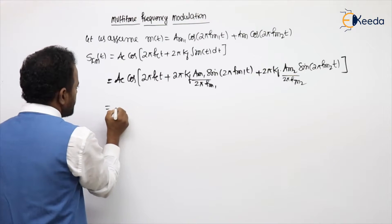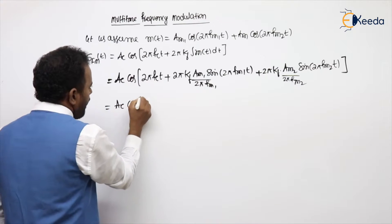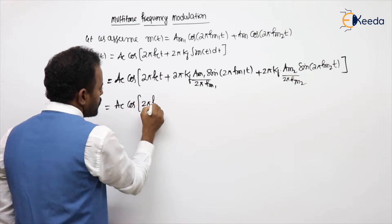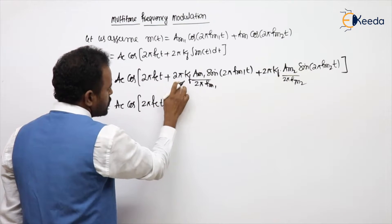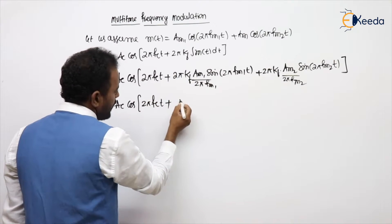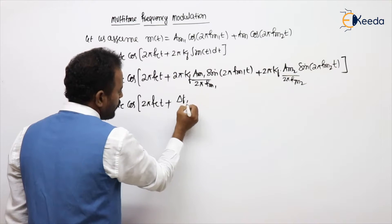Try to cancel the similar terms and let's see the remaining. Ac cos(2π fc t + 2π, 2π gone, kf Am1 is Δf1).